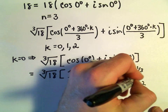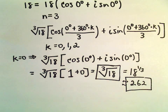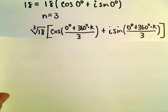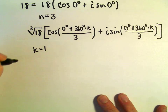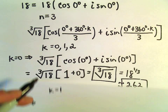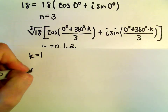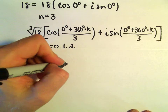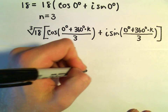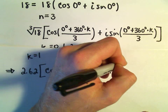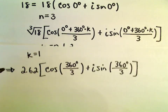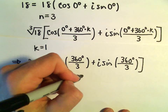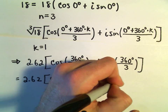Now we plug in k equals 1. We'll use the cube root of 18, approximately 2.62. Then we have cosine of (0 degrees plus 360 times 1) over 3, plus i sine of 360 degrees over 3. That simplifies to 2.62 times cosine of 120 degrees plus i sine of 120 degrees.